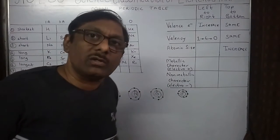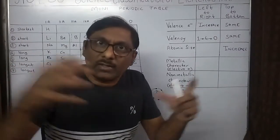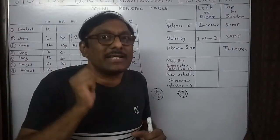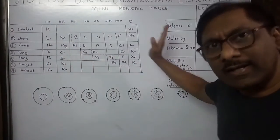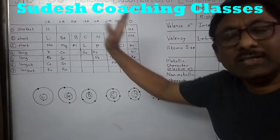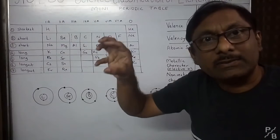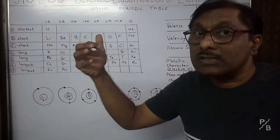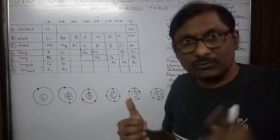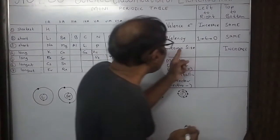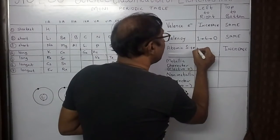Chlorine has seven electrons in the outermost orbit. Since the pull towards the nucleus increases as electrons are added, the atomic size decreases. So as we go from left to right in each and every period, the atomic size decreases because the electrons are getting attracted towards the positively charged nucleus. In a nutshell: atomic size as we go from left to right decreases.